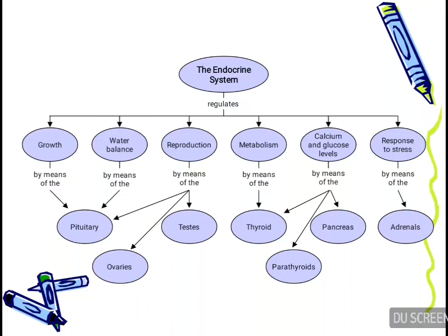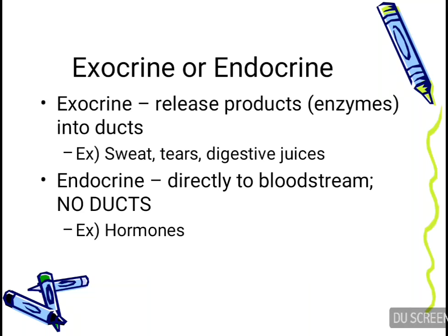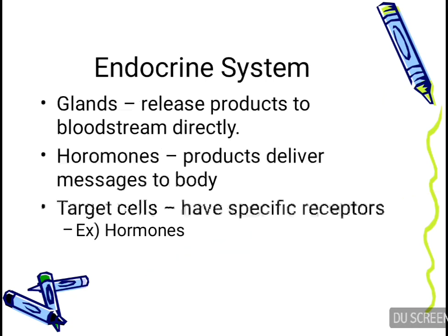It does this by means of various glands such as pituitary, ovaries, testes, thyroid, parathyroid, and adrenal. There are two types of glands in our body: exocrine and endocrine. Exocrine glands release secretions such as enzymes through ducts — for example, sweat, tears, and digestive juices. Endocrine glands, on the other hand, secrete directly into the bloodstream, possess no ducts, and their secretions are known as hormones.